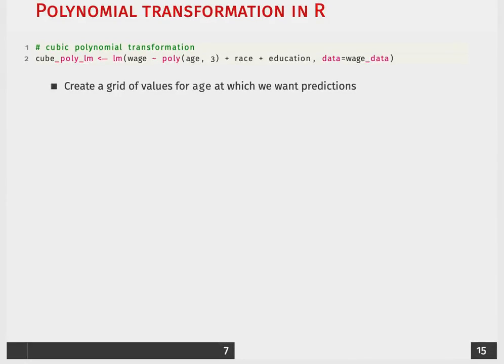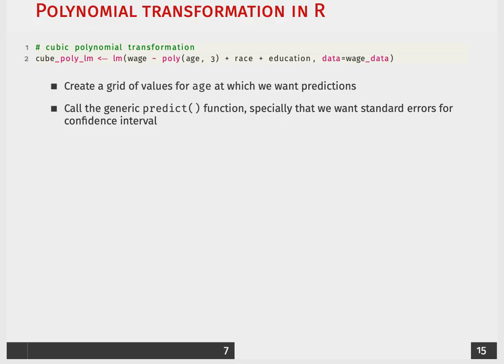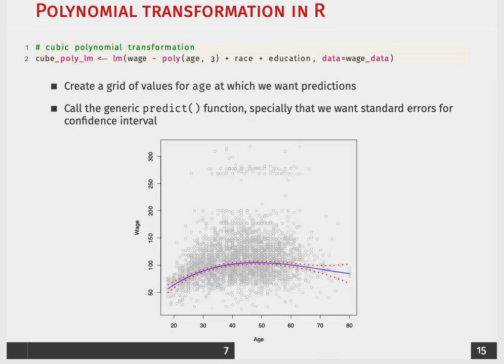The next step is to create a grid of values that we're going to fill in for age that we want predictions for. We're just going to use the generic base function predict, and we're specifically going to want to say that we want standard errors for our confidence intervals.